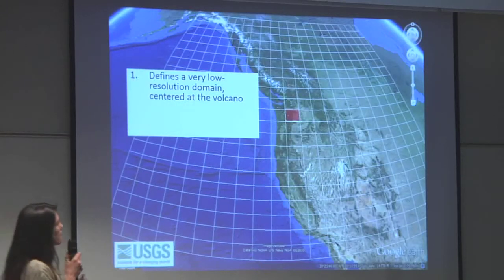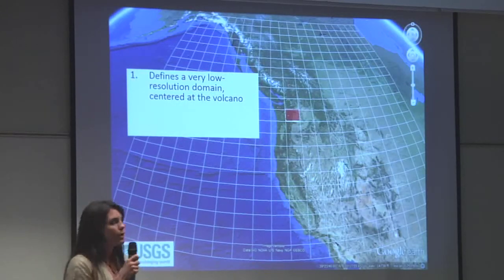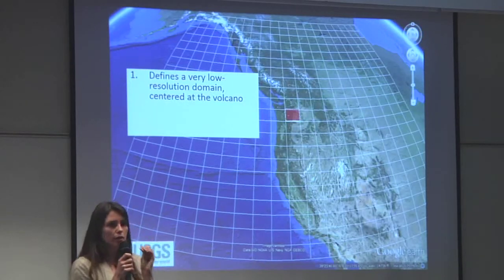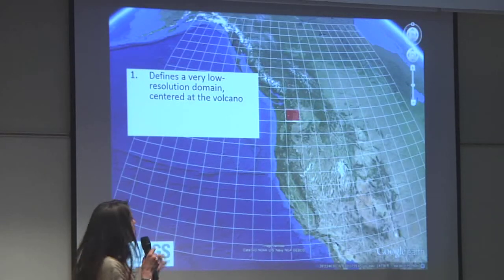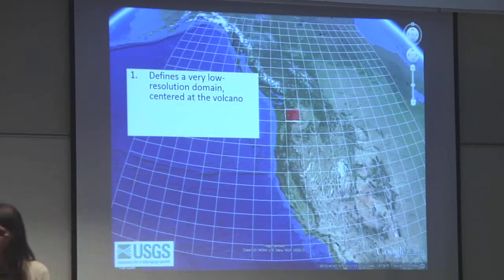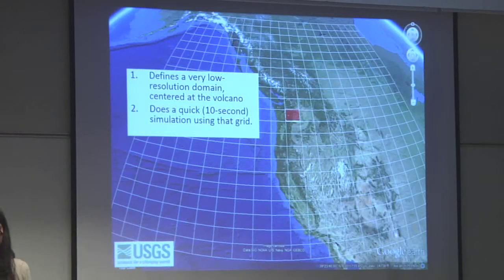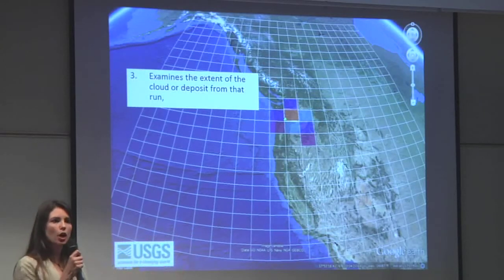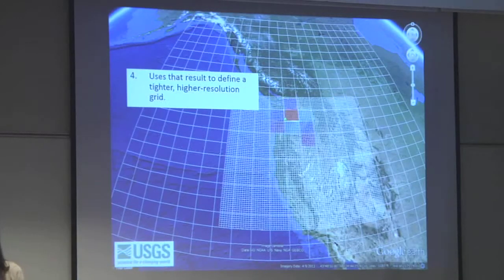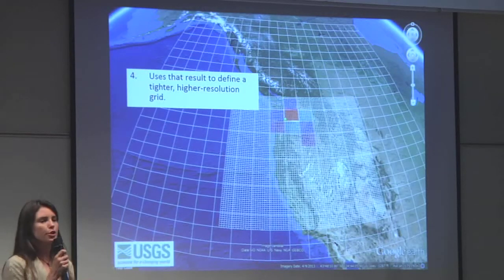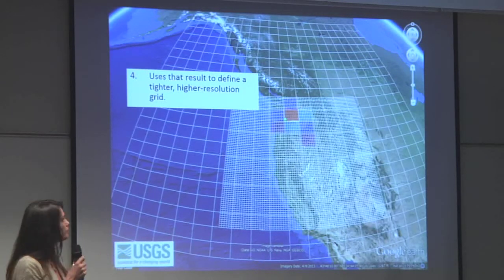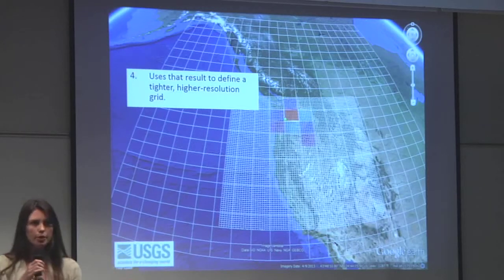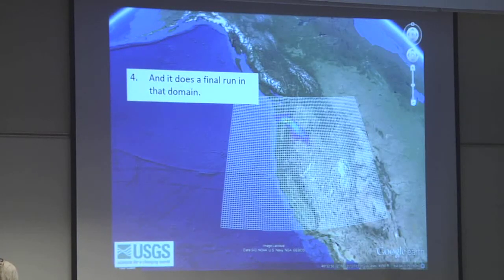The model starts itself up by doing a quick mini run at the beginning in a coarse node right over the volcano — a ten-second quick simulation — then sees how far the ash cloud is supposed to go in that wind field and adjusts the grid to capture just the area needed over the prescribed run time. It then does the full run in that better-described mesh.